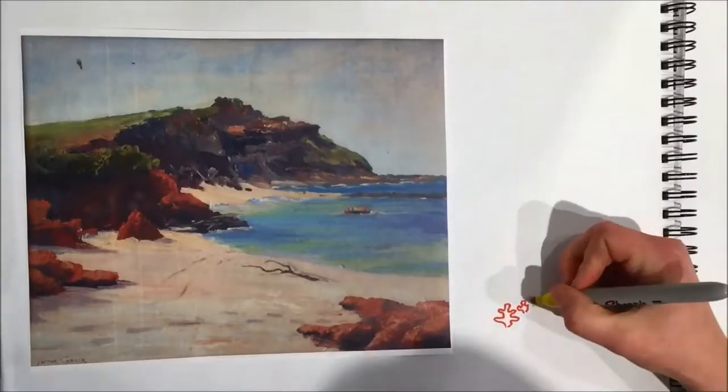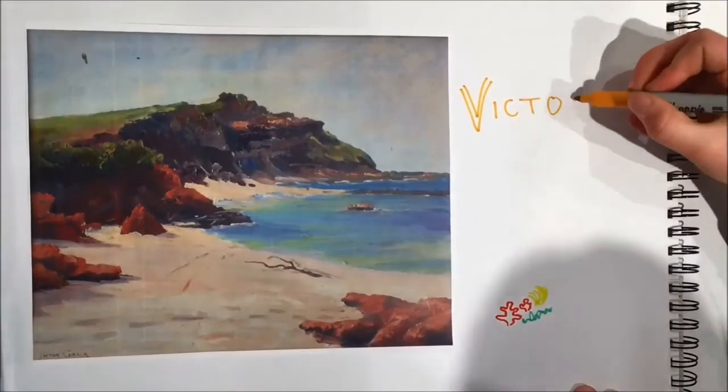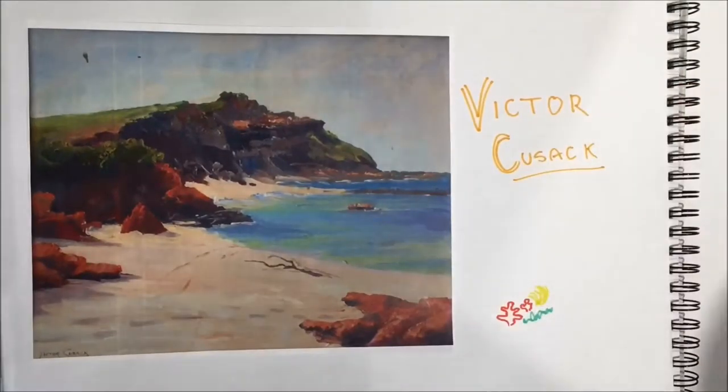Long Reef was painted in 1962 by Victor Cusack. It's the fourth example of a form of art we will show you and like the first two, it's a painting, meaning it's 2D.